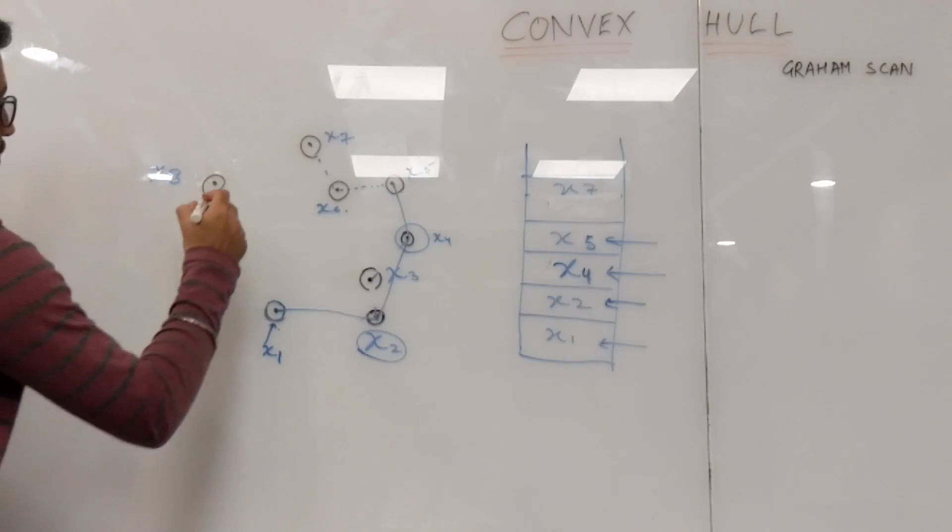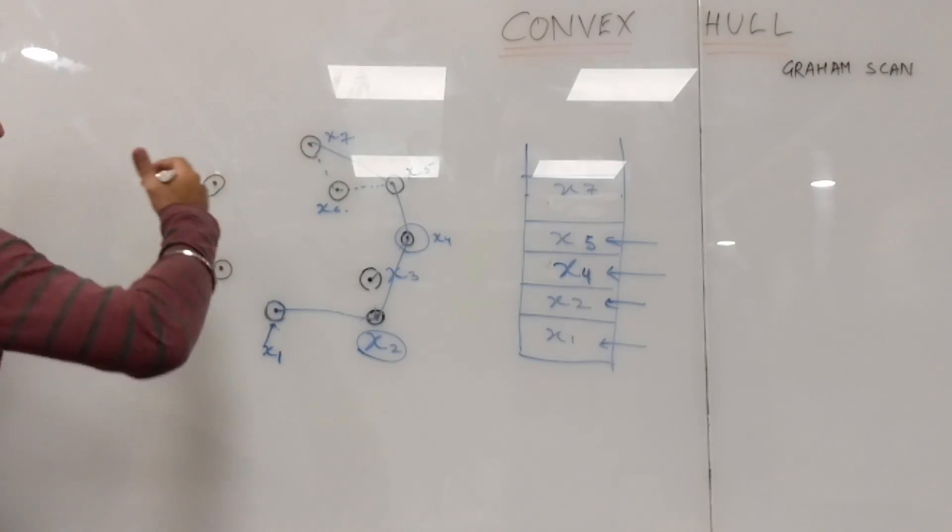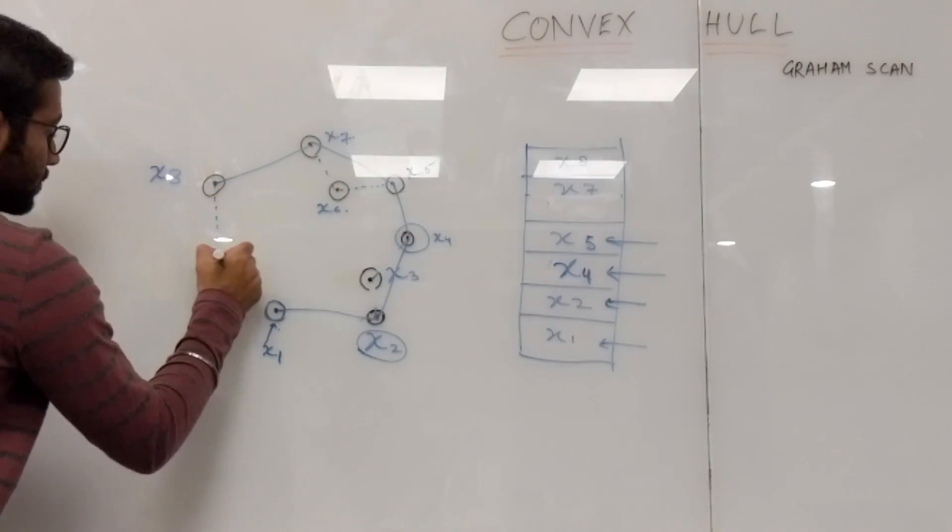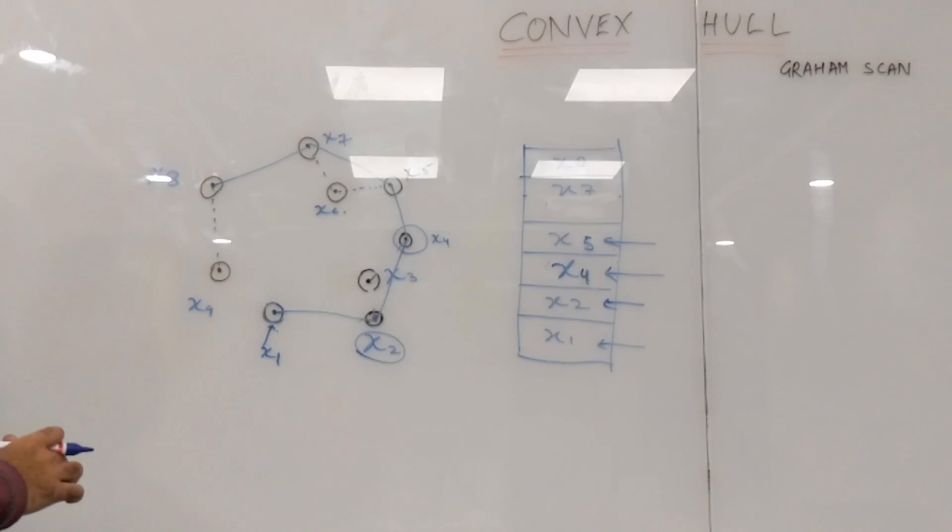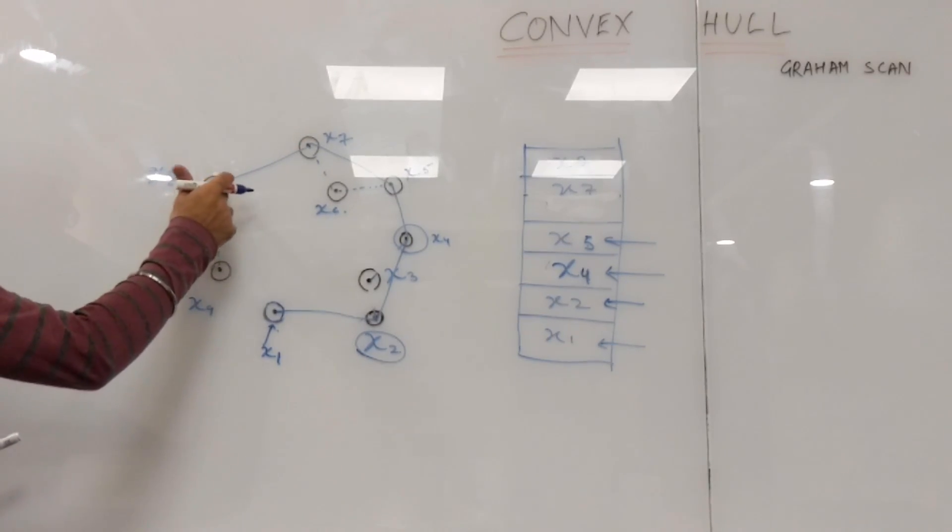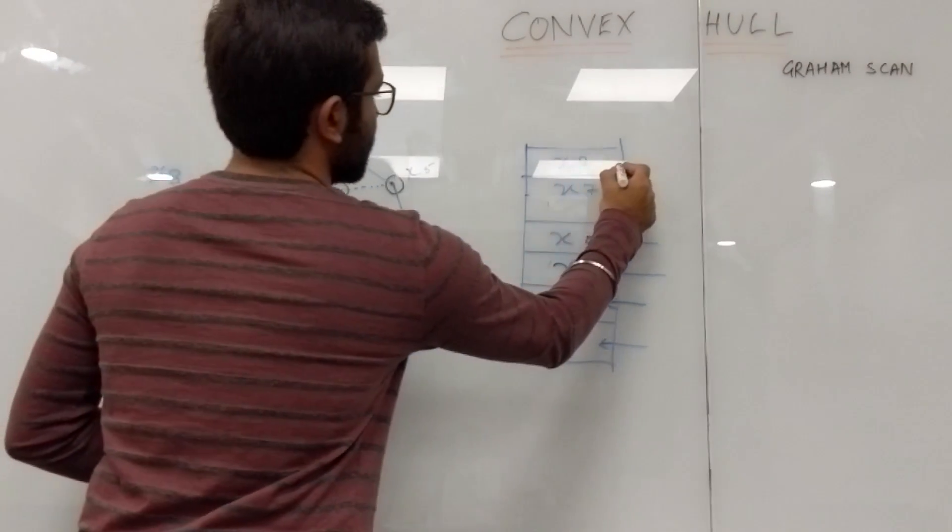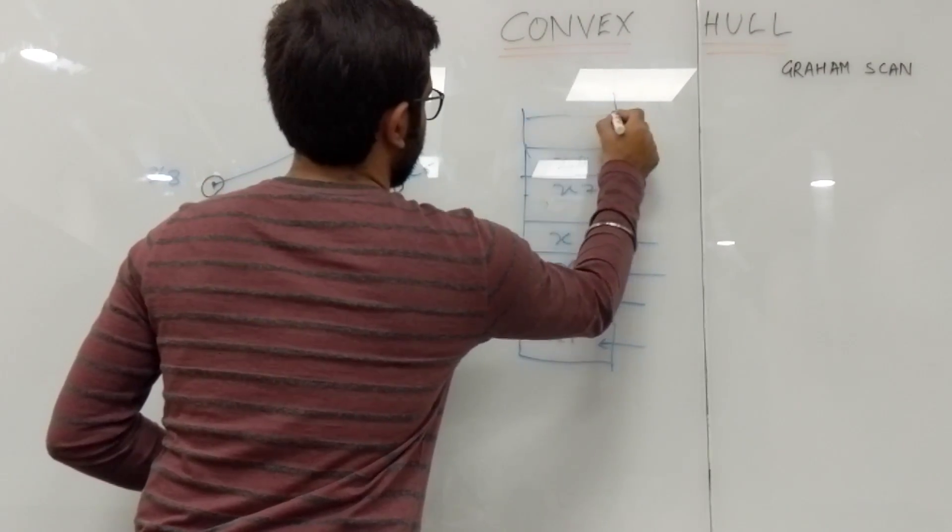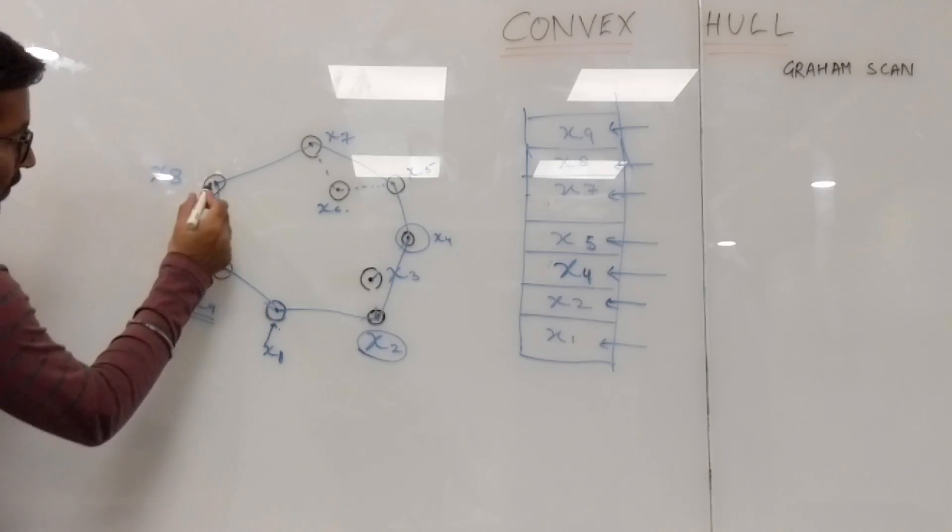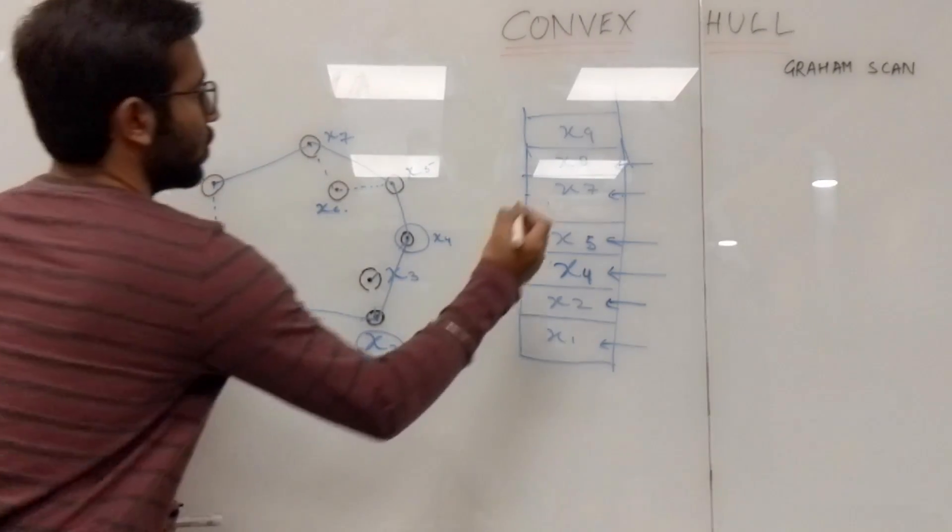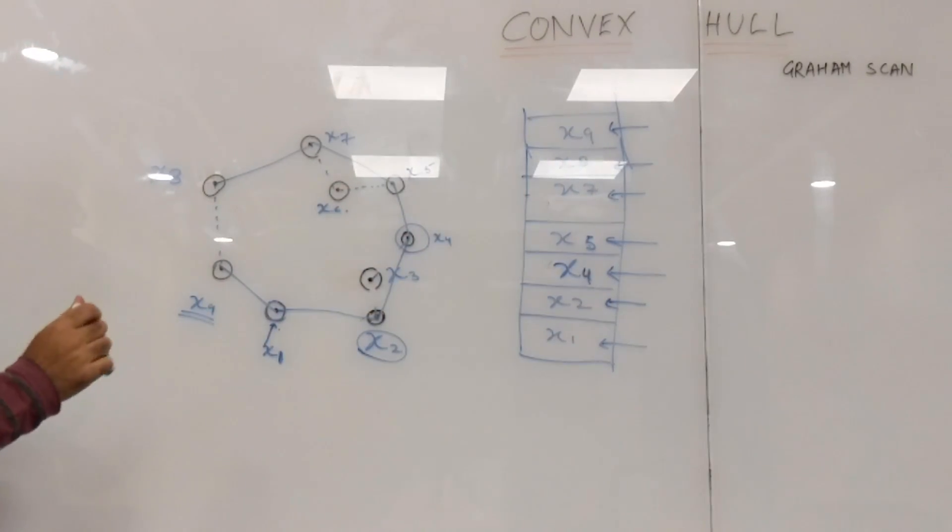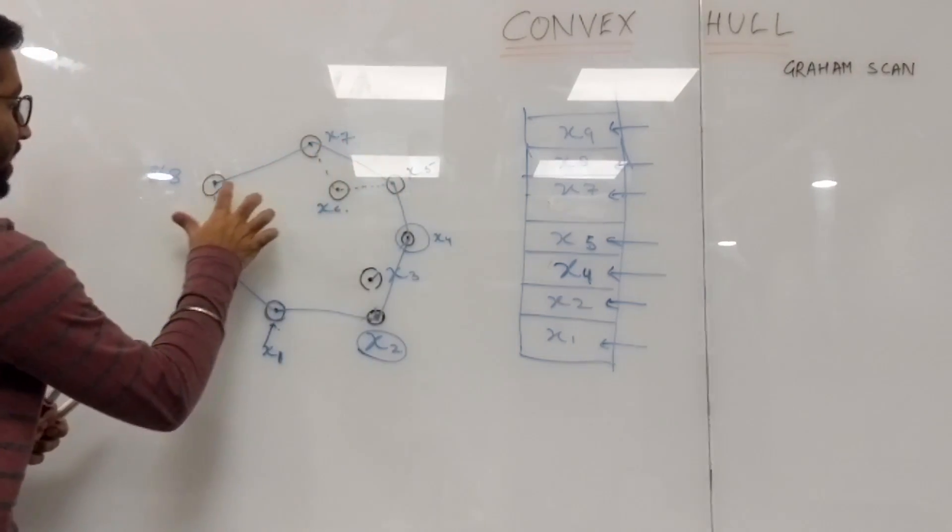Now we'll move on to the next point, which is X8. Here the line takes again a left turn, and hence we can be sure that X7 is in the stack. Now similarly for X8, for making sure that whether X8 is there in the polygon or not, we'll move to X9 and see whether the line from X7 to X8 is taking a left turn in order to reach X9, which it is, and hence X8 is also in the polygon. So now for X9 as well, we'll do the same, see whether the line is taking a left turn or not, and hence we'll just connect these two points in the end. So we have a stack containing the points which constitute the polygon. As we can see, X1, X2, X4, X5, X7, X8, and X9 are the ones which make the convex hull.